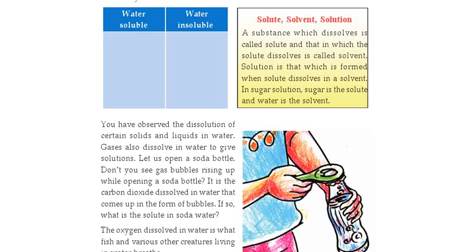Good morning, children. Before starting the class, we can just remind the things we have studied in the previous class. The last portion is solute, solvent, and solution. What is solute? Solute is the substance which dissolves. And what is solvent? The substance in which it dissolves is called a solvent. That mixture is the solution.